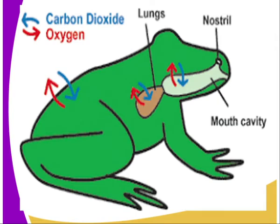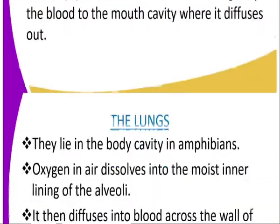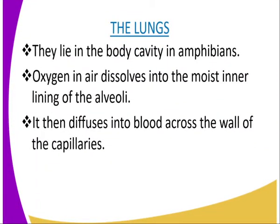You can see the lungs there — they are very well supplied with blood by the blood vessels. Oxygen in the air dissolves into the innermost lining of the alveoli, then diffuses into the blood across the wall of the capillaries, combines with hemoglobin in the red blood cells, and is transported to all parts of the body. The carbon dioxide from the tissues is carried by the blood and diffuses into the alveoli, then is pumped out by the pumping action of the mouth.